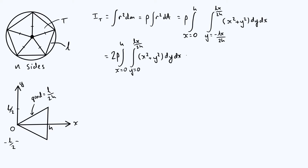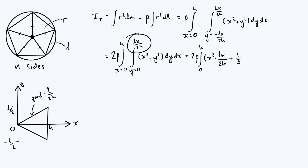So I can write this integral as 2ρ times the integral where x goes from 0 to h, and the inner integral where y goes from 0 up to Lx/2h, of x² + y² dy dx. Now let's do the y integral first. When you integrate x² with respect to y, you get x²y, evaluated at the upper limit: x² · Lx/2h. When you integrate y² with respect to y, you get y³/3, which at the upper limit gives (1/3)(Lx/2h)³ = L³x³/24h³.